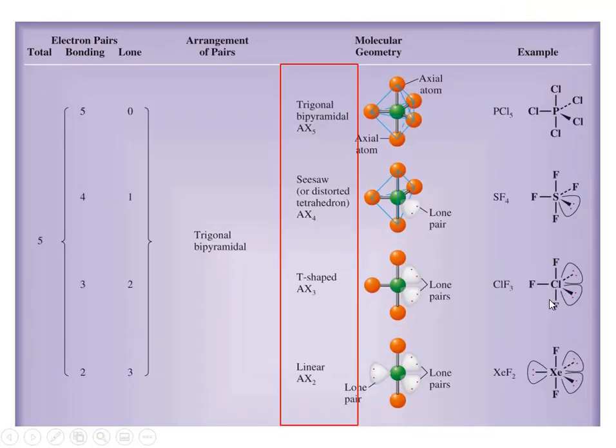Going down. So the next class is the trigonal bipyramid and you'll notice that this is still the first one there. X represents the outside atoms. And so I have five and zero is trigonal bipyramid. Again, this is outside atoms and this is lone pair. Four and one is seesaw. Three and two is T-shaped and two and three is linear.